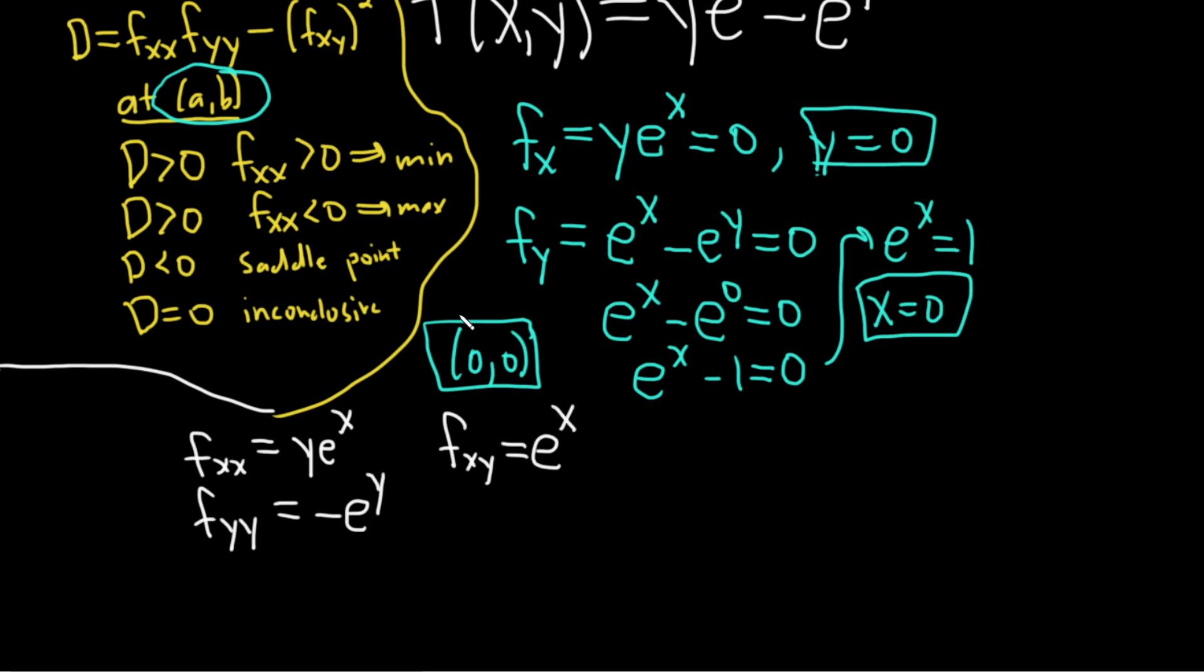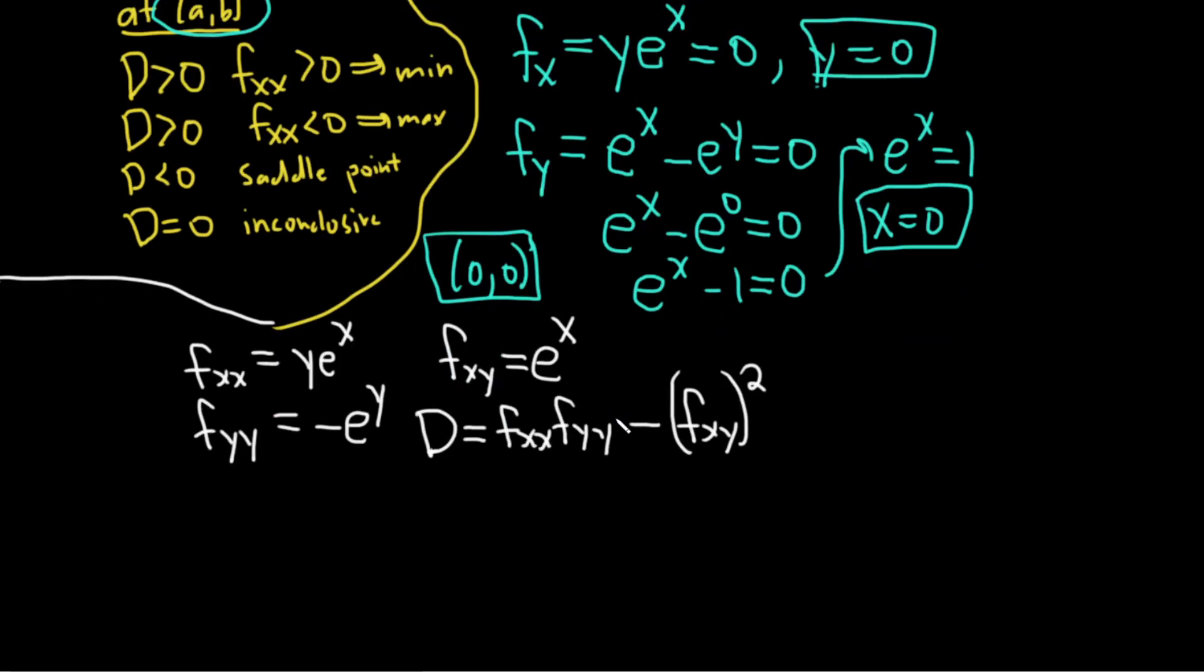That took a lot of brain power. You really have to know how to compute partial derivatives to do this. Big D is going to be fxx times fyy minus fxy squared.